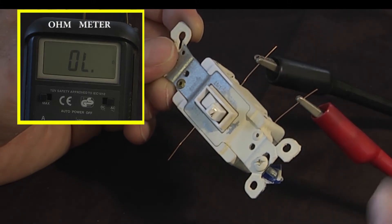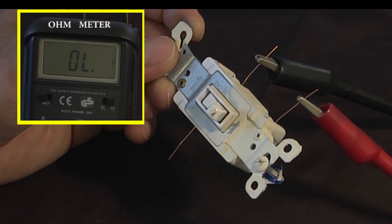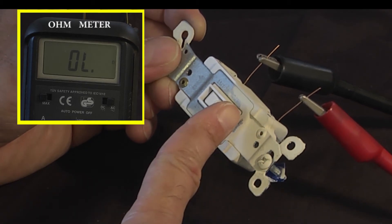Now connect the test leads, red or black make no difference here, to any of the two screws on the switch and flip it back and forth.